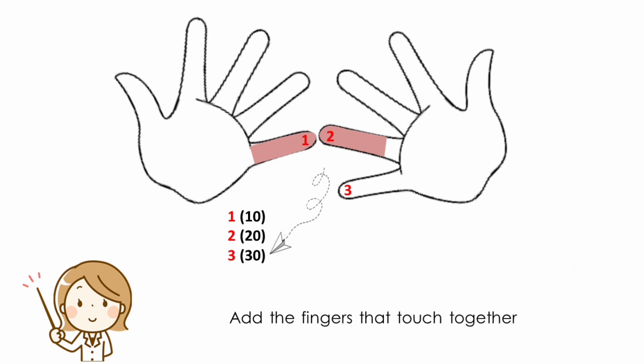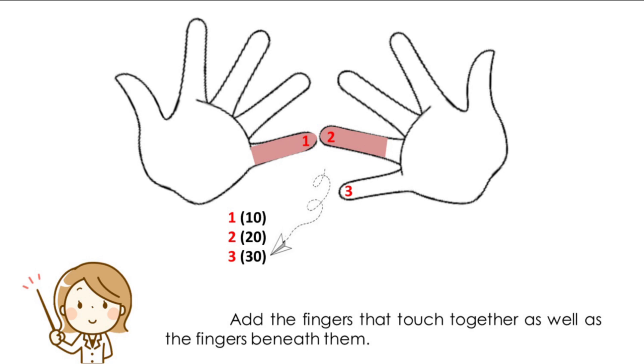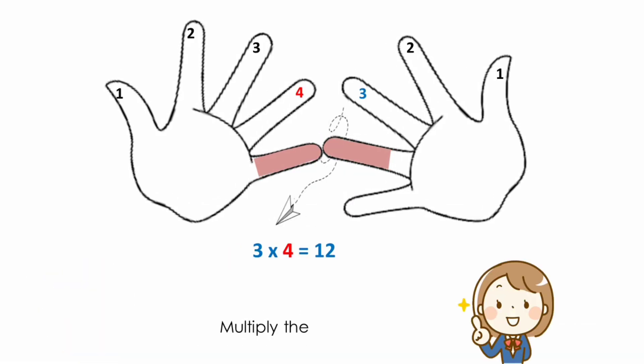Add the fingers that touch together as well as the fingers beneath them. The next step is to count the touching fingers as well as the fingers below them. These will represent the tens. In this case, you would count the ring finger on your left hand, the pinky on your left hand, and the pinky on your right hand. Each finger that you count will count as 10. In this case, the total is 30.